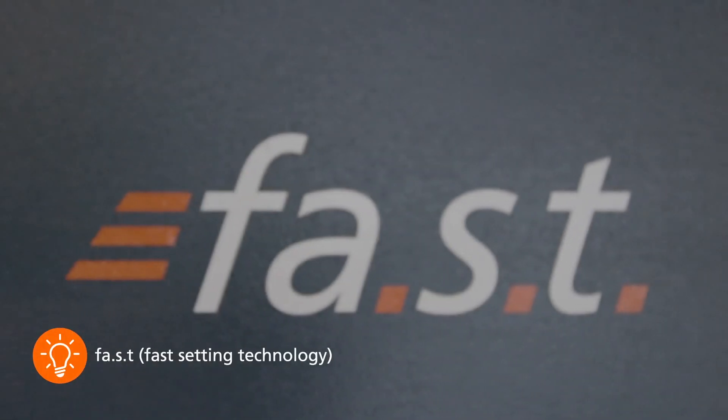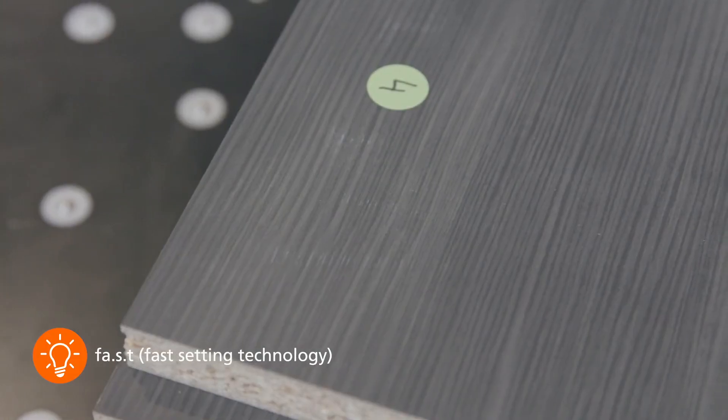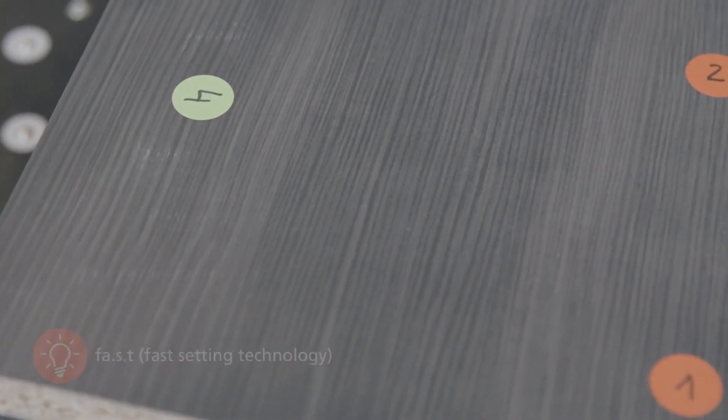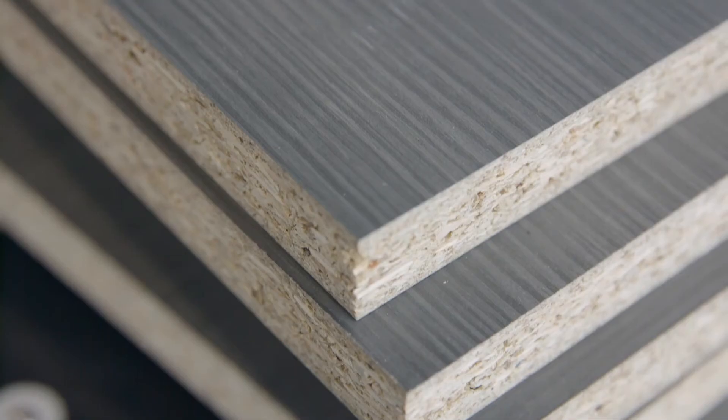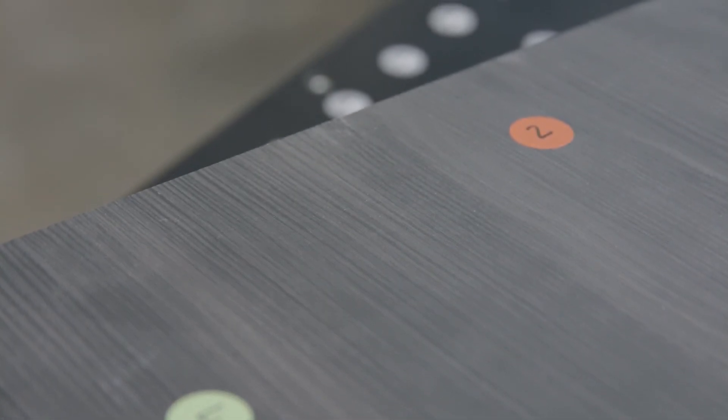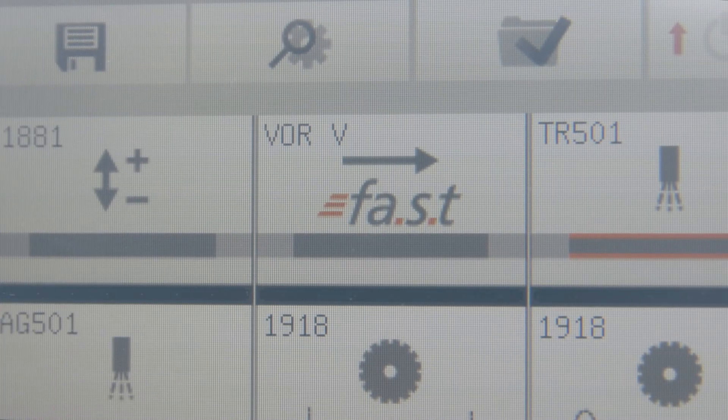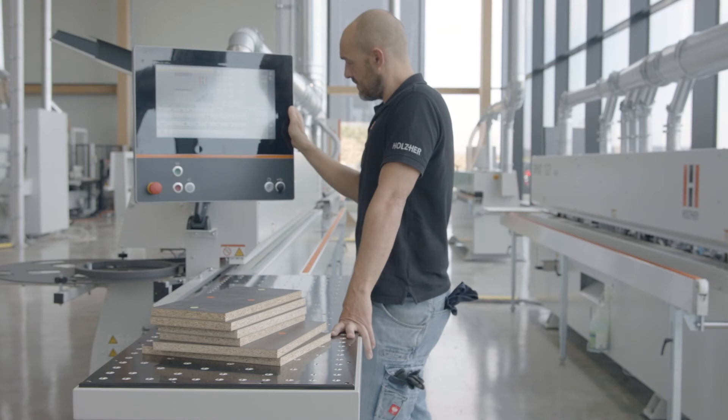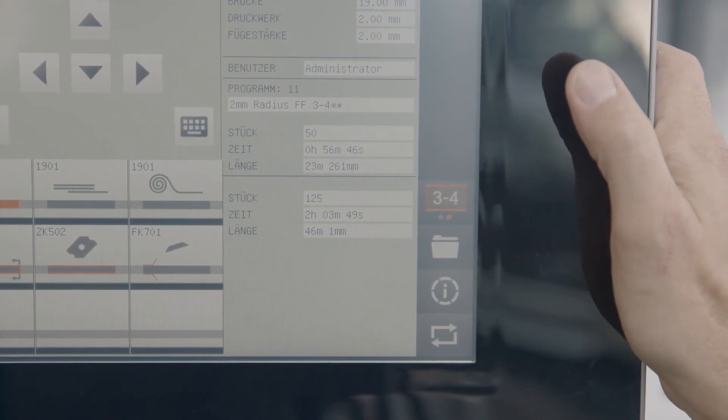The newly developed FAST system, FAST setting technology or Setup in the Gap, developed by Holzher, is installed as standard on the Sprint and is unique in this class. With FAST, you can run different processing operations simultaneously in the edge banding machine.